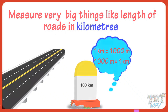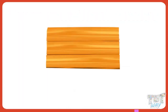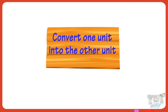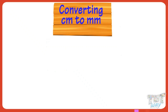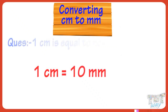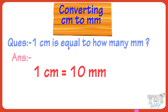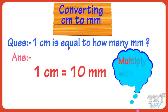Now let's learn how to convert one unit into the other unit. Let's first learn converting centimeters to millimeters. One centimeter equals 10 millimeters. So whenever you have to convert centimeters to millimeters, you will multiply them with 10.